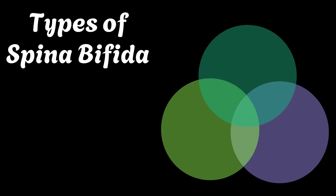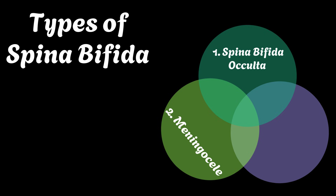What are the types of spina bifida? There are three types of spina bifida: spina bifida occulta, meningocele, and myelomeningocele. We will now discuss each type in detail.